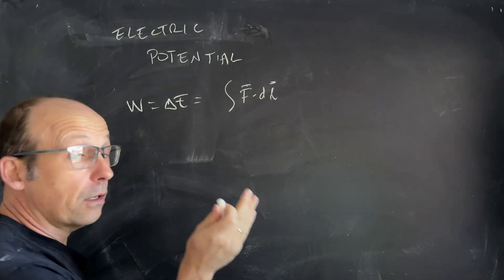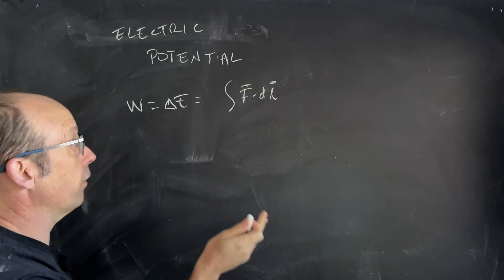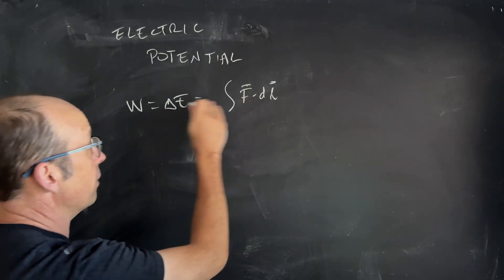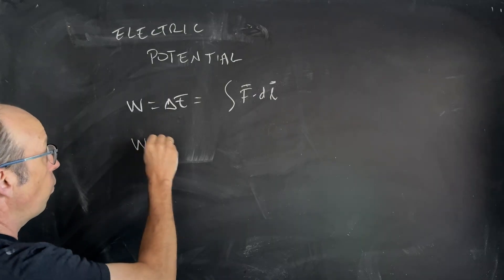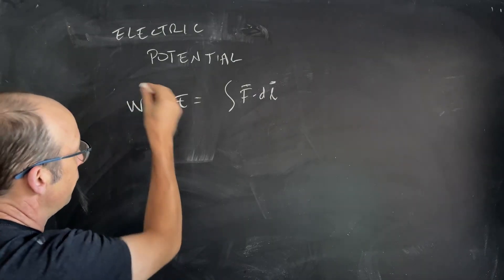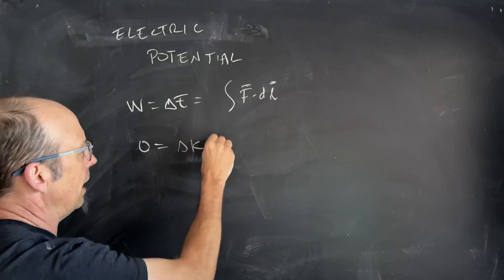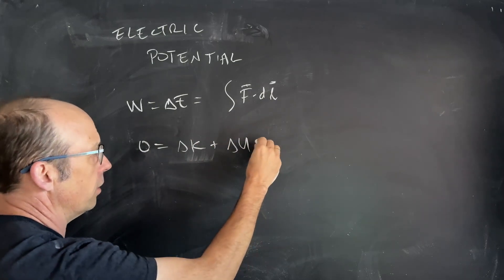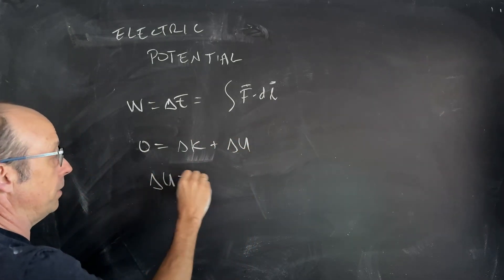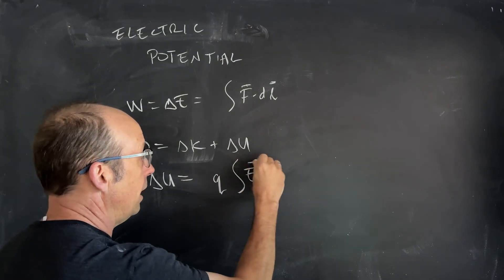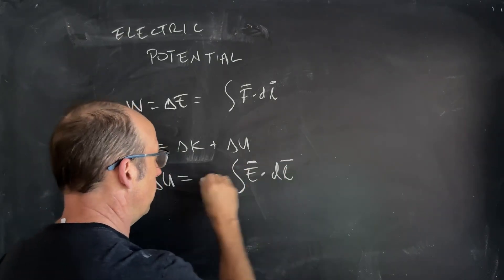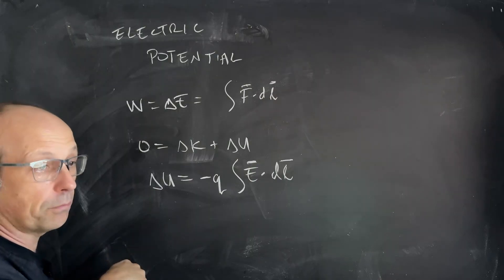Now, if we know that we have a conservative force, we can move this to the other side of the equation to make it an energy. So we have work, in this case, let's say it's zero and it's going to be delta kinetic energy plus delta electric potential energy. So the delta electric potential energy is going to be Q times the integral of E dot DL negative. It became negative because we moved to the other side of the equation.